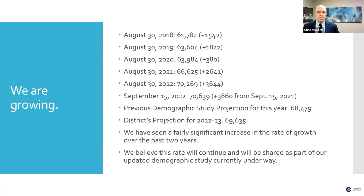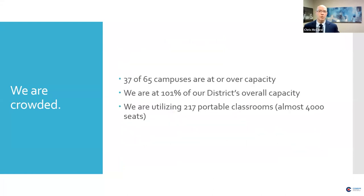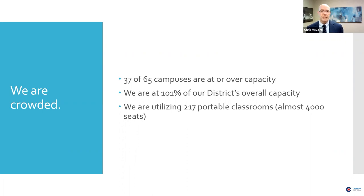We had a demographic study in 2018 that I'll refer to periodically. We also have some very early preliminary results from a demographic study we just conducted in the past couple of months. Of our 65 campuses, 37 are over capacity — translating to 101% of capacity for our district. Currently, to make it work, we are using 217 portable classrooms. That is not our preference, but we will use it where needed and we've made them as nice as possible.